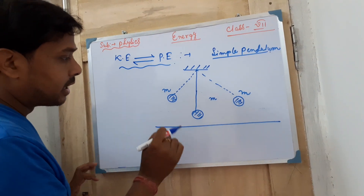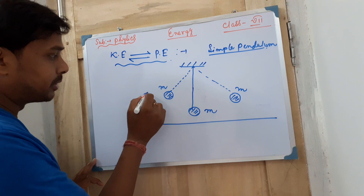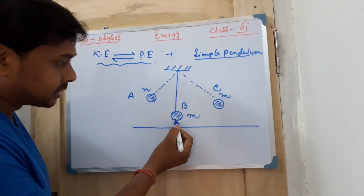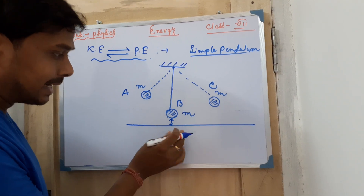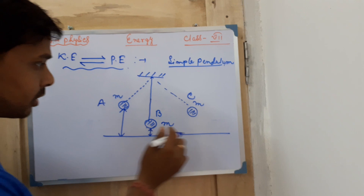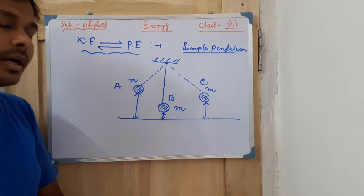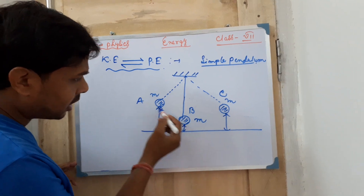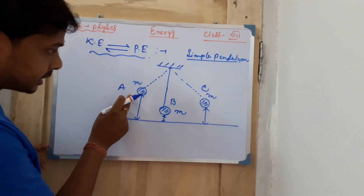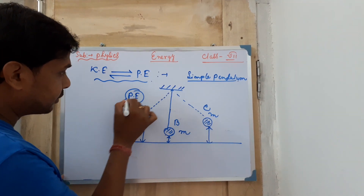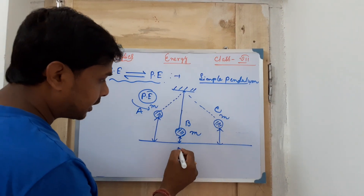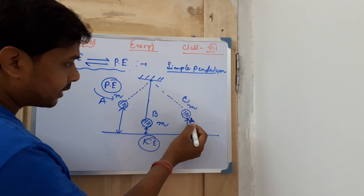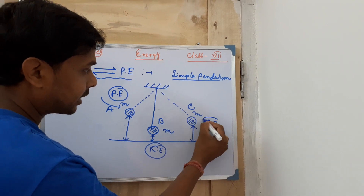Consider three positions A, B, and C of the pendulum. At position B (the center), the height of the bob from the ground is less. At positions A and C (the extreme points), the height is more. When the pendulum goes to an extreme point it momentarily comes to rest, and the potential energy is at its maximum. As it returns to the center, potential energy converts to kinetic energy.